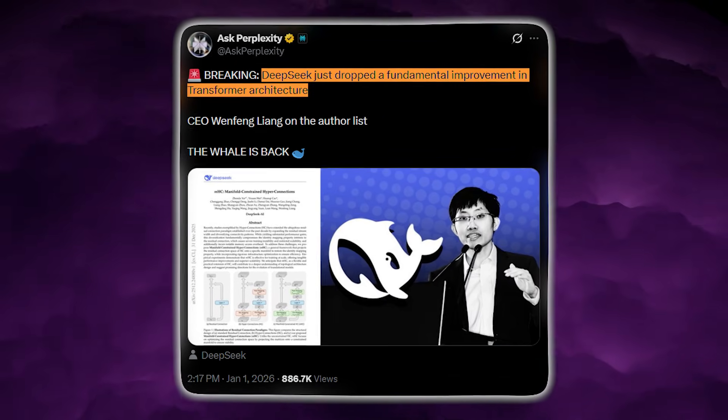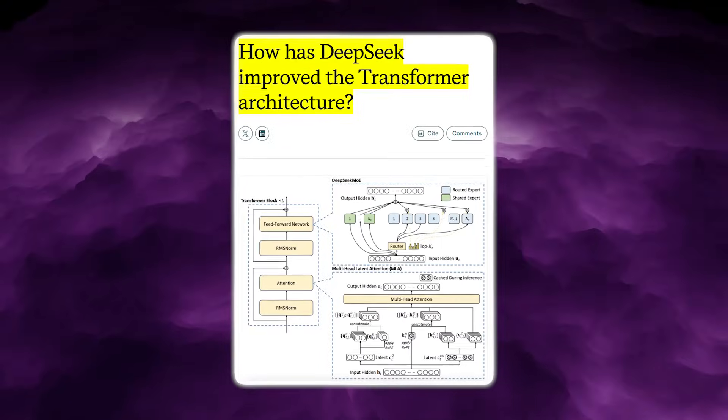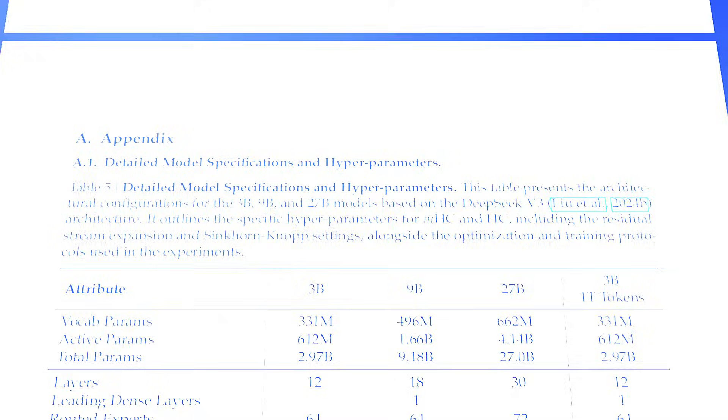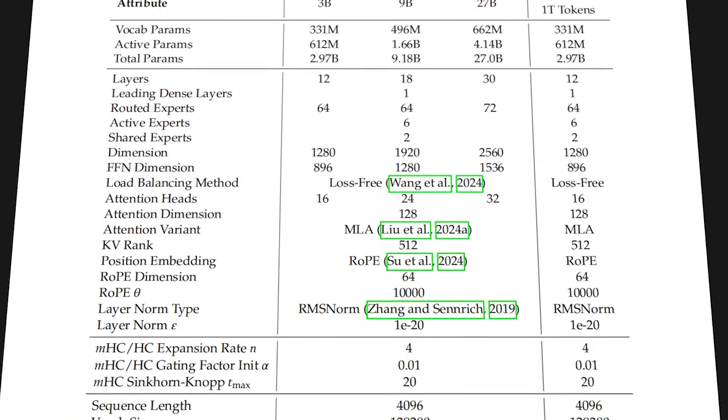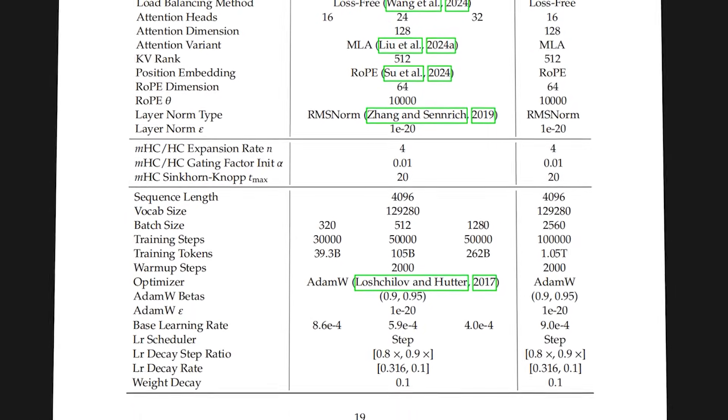The year opened with an AI architectural earthquake, a research paper that proposes fundamental improvement in transformer architecture. On January 1st, 2026, DeepSeek released a study aimed at solving a problem every serious AI lab has wrestled with: training instability in very deep networks.